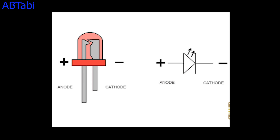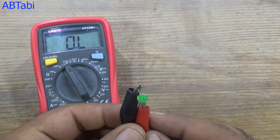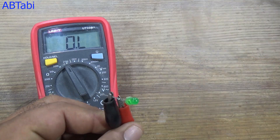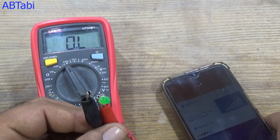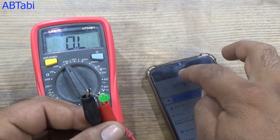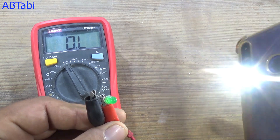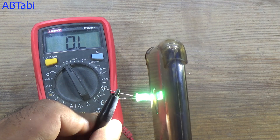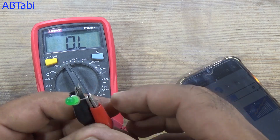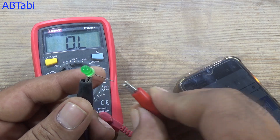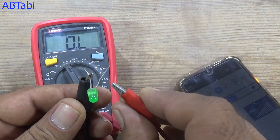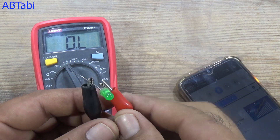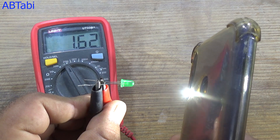The anode pin is a positive pin and the cathode pin is a negative pin. When we connect supply to the LED light, the LED light glows up. In reverse mode, the light emitting diode crosses resistance from anode to cathode.